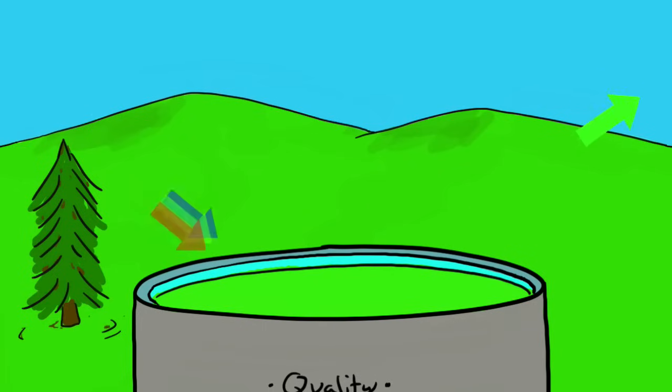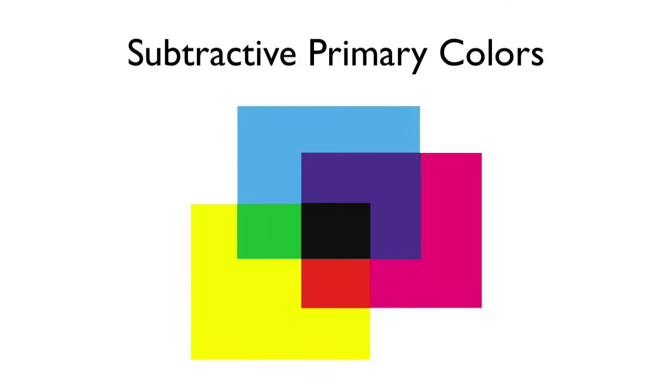Notice that in this case, we're subtracting color to come up with a new color. The three subtractive primary colors are cyan, yellow, and magenta. Via subtraction, you can combine these three color pigments in various proportions to make any color of the rainbow.